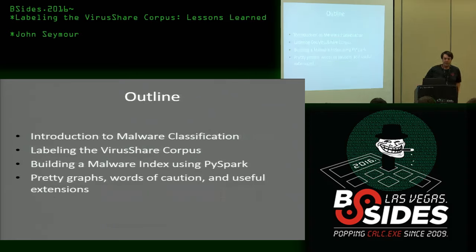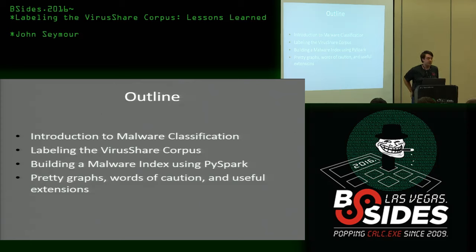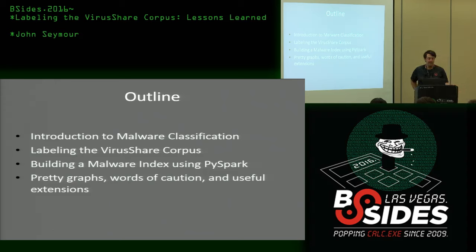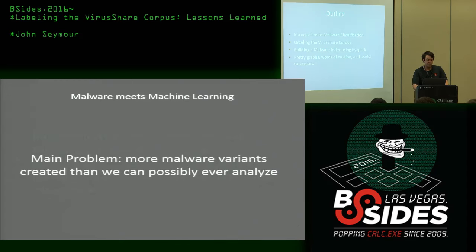We'll start today with a high-level description of malware classification in general — what works, what doesn't. Then we'll segue into labeling the VirusShare corpus, why that's good, how it helps, building an index, why we need an index in the first place, using a cool tool called PySpark. We'll end up with some pretty graphs, words of caution, and some useful extensions.